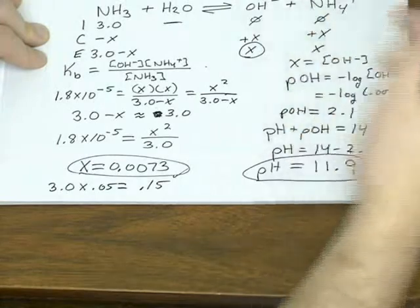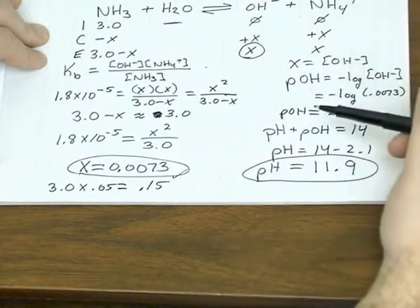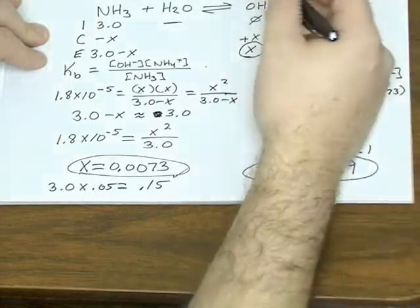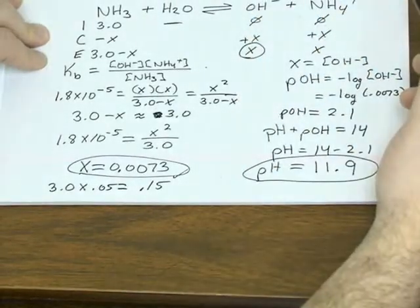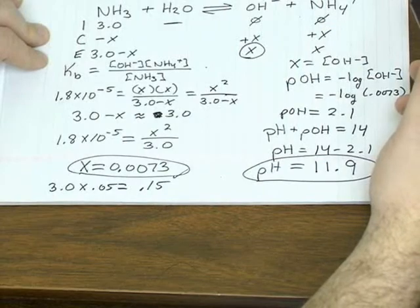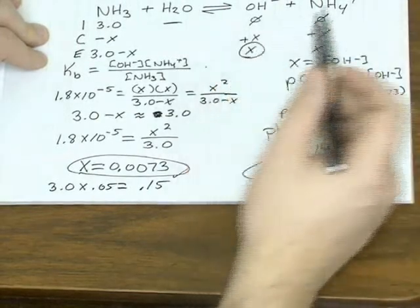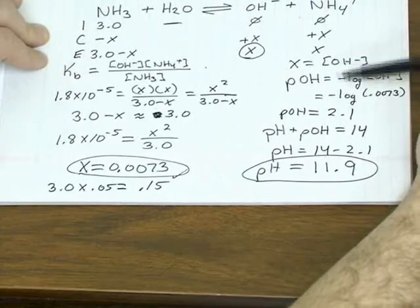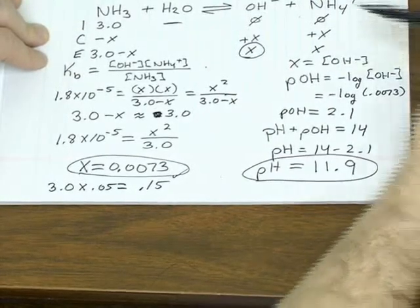So like we see, whether it's an acid or a base, it's essentially the same method for finding the pH of that given concentration. The only thing is that for a base, when we solve for x, we've got to do just one extra little step because x is actually hydroxide, not hydronium.